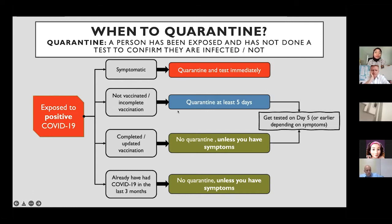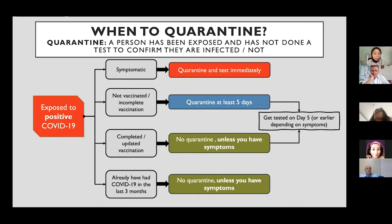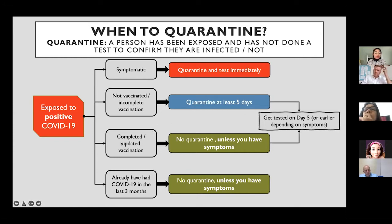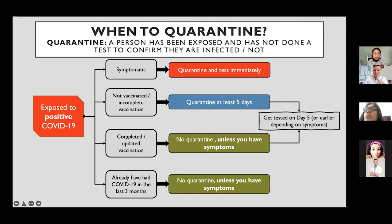Quarantine applies to people who are not vaccinated, or whose primary vaccination is incomplete — for example, if you've had a Sinovac first dose but not yet the second dose. In that case, the person needs to quarantine for at least five days and get tested on day five. However, a person who has completed their primary vaccination and received their booster does not need to quarantine after exposure.